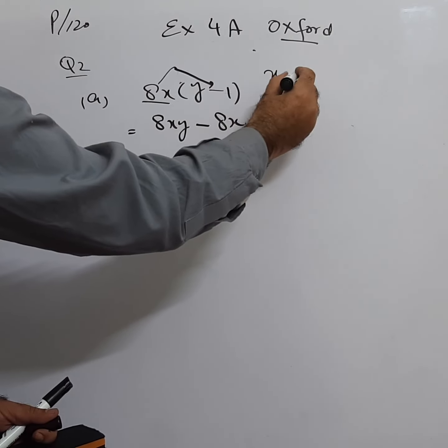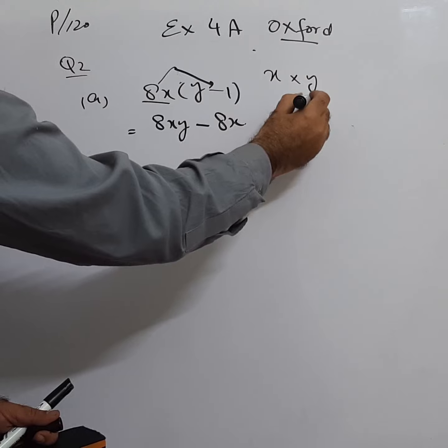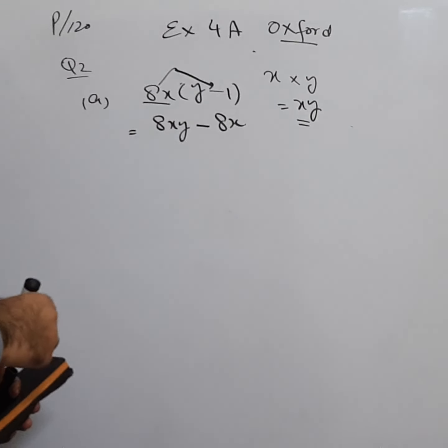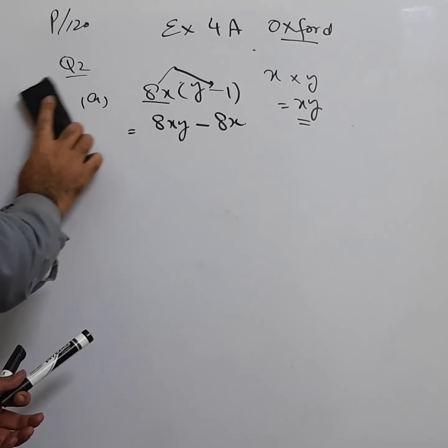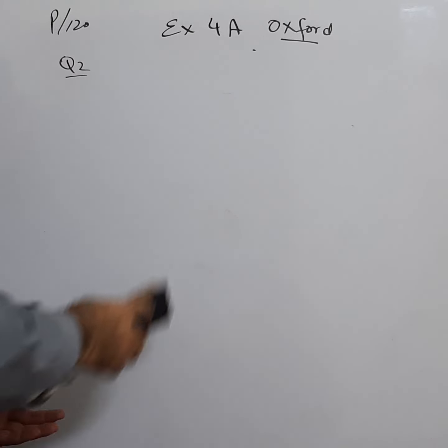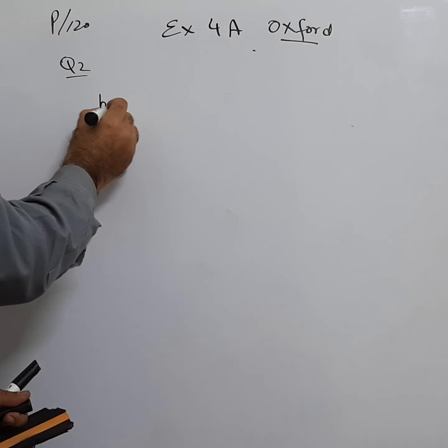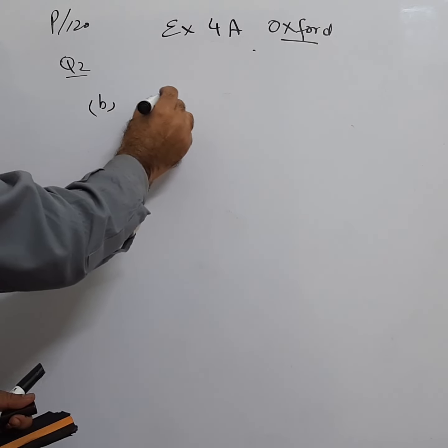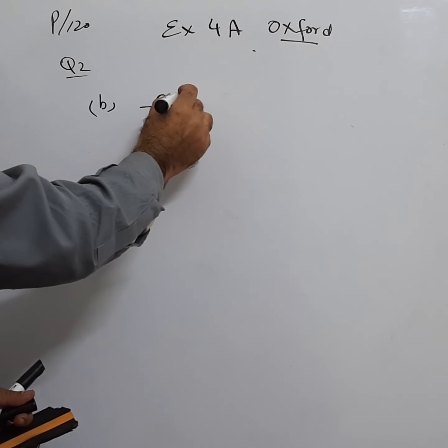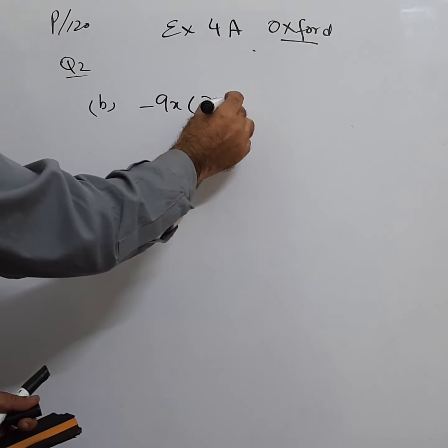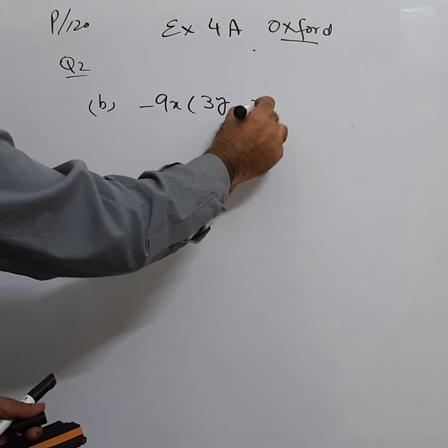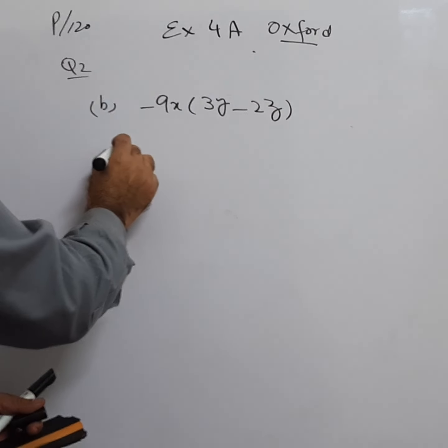So this is the way to expand this. Remember that x multiplied by y is equal to xy. Then we move to the second part, part b, which is -9x into (3y - 2z). We will be opening the bracket. This constant will be multiplied with the constants and variable with the variable.